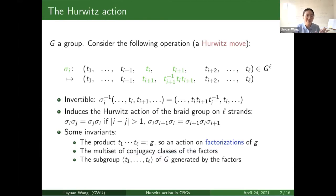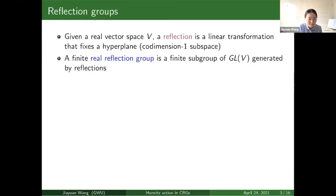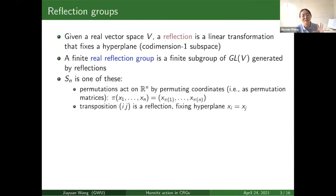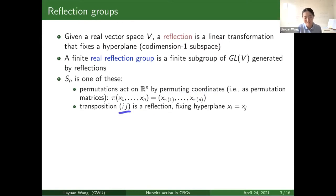Today we consider the Hurwitz action when the group is a reflection group, so in this scenario all the factors are called reflections. Starting with the real case: if we have a real vector space, then the reflection is a linear transformation that fixes a hyperplane. A group generated by these reflections is called a finite real reflection group. One example is the symmetric group — the permutation acts on the space by permuting coordinates and every transposition is a reflection. If the transposition is ij, then it fixes the hyperplane where the two coordinates are the same.